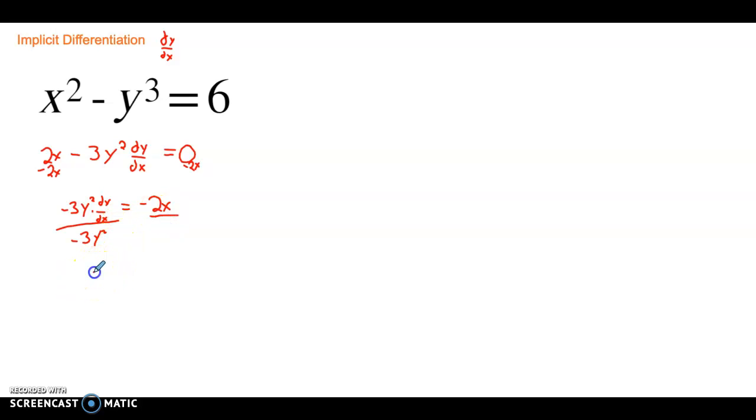When we do that, we get our dy over dx equal to negative 2x over negative 3y squared. Anytime you can do any kind of cleaning up with this fraction, go for it. There's really nothing to do other than the negatives. Negative divided by negative is a positive. So, 2x over 3y squared. That is our answer.